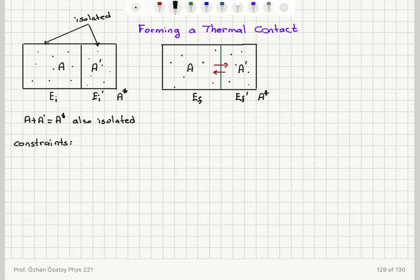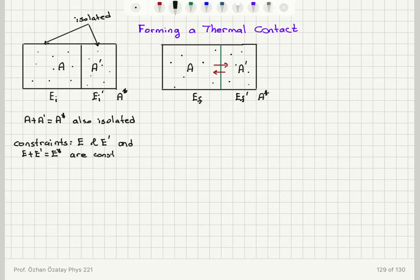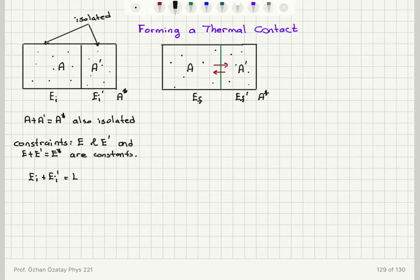For the constraints on these two systems: E must be a constant, E prime (the energy of the prime system) must be a constant, and E plus E prime, which is E star (the total energy of the star system), are all constants. So all three are constants in this initial scenario. Initially I have total energy E sub i for system A and E sub i prime for system A prime, so E_i plus E_i prime equals E_i star.